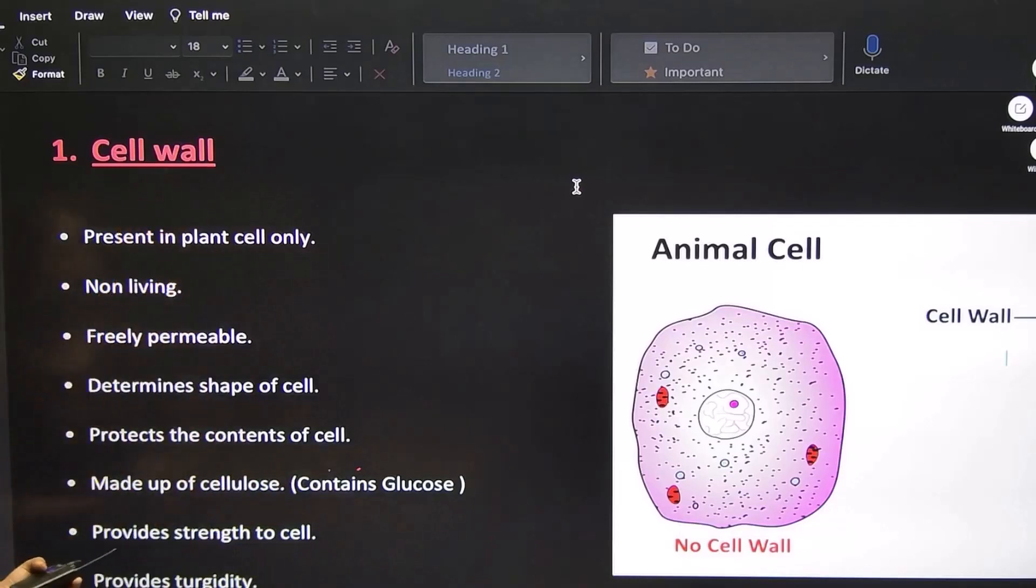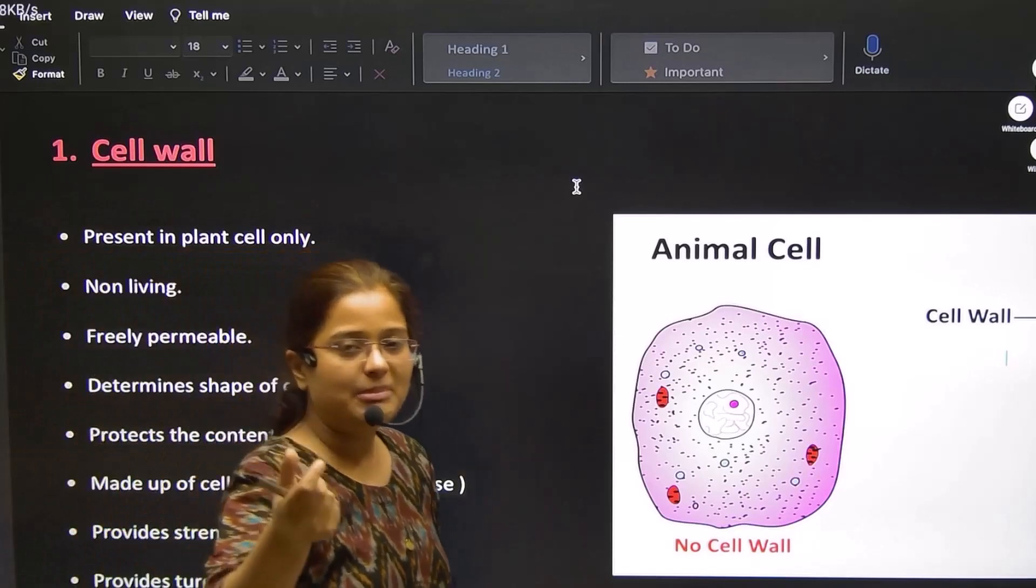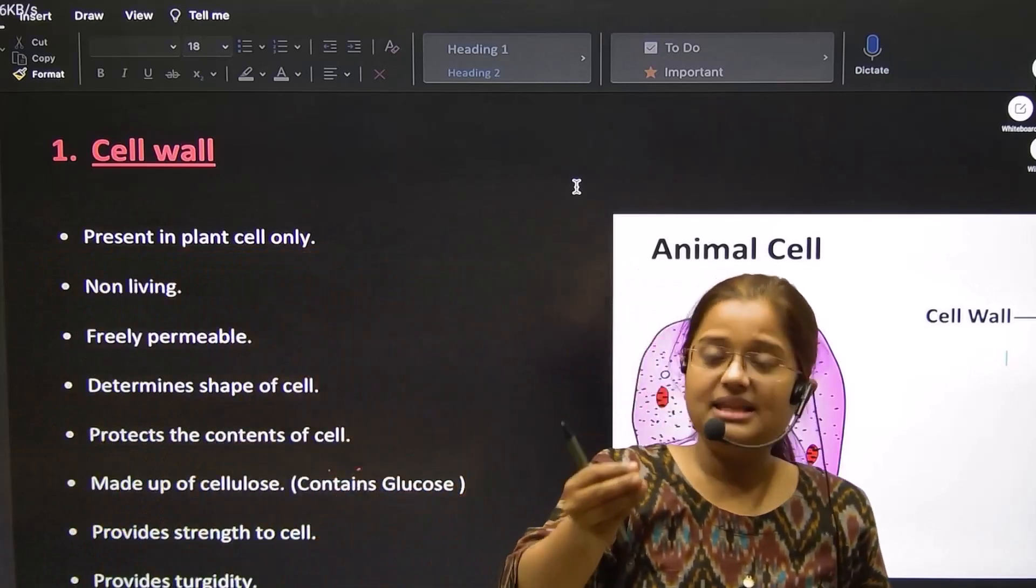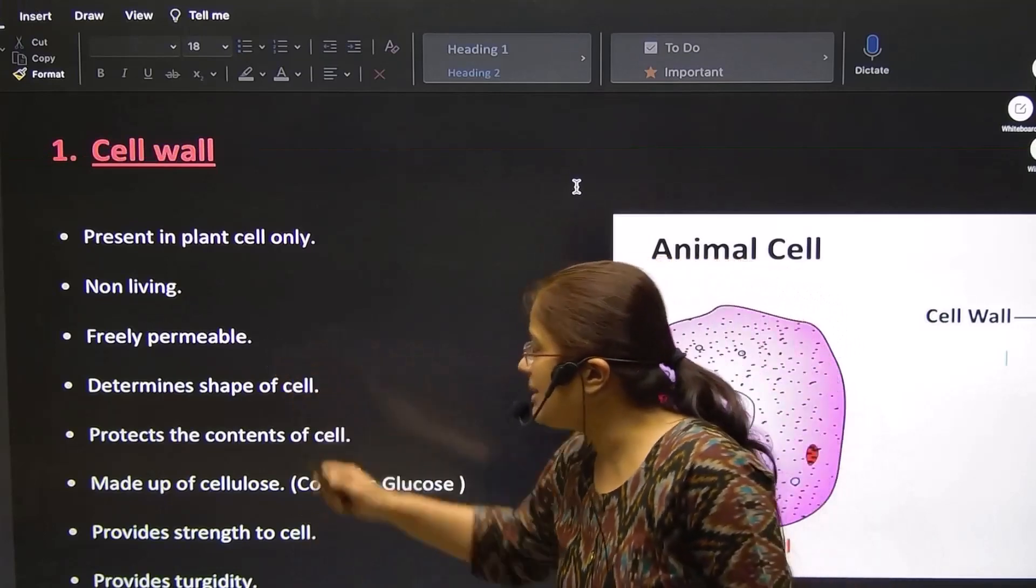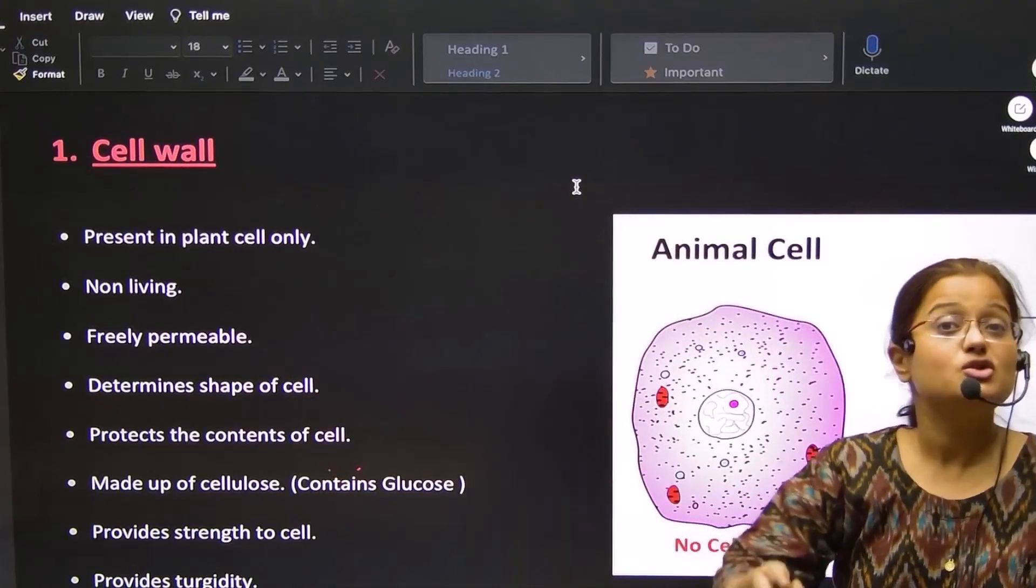The cell wall is non-living. The cell wall is freely permeable. It means anything which lets the material in and out of it. The cell wall is freely permeable.